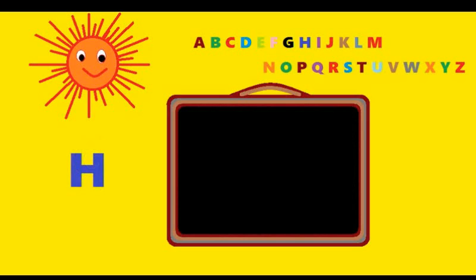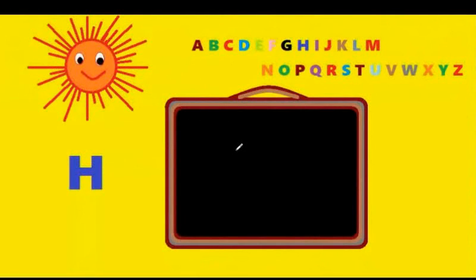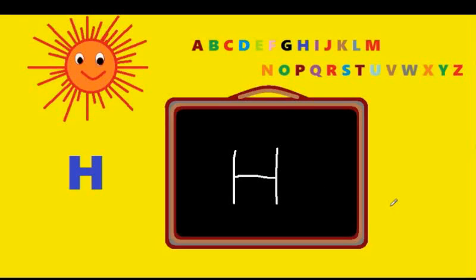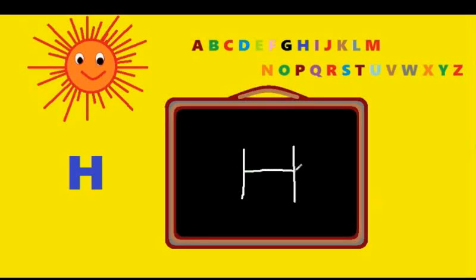H. You have to start from the top, come down the tree, down the street again, and across the tree. You have to make a standing line, again a standing line, and a sleeping line. That's H. H is for helicopter.